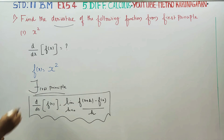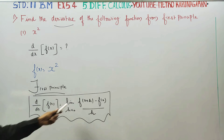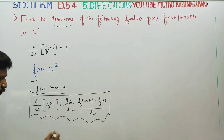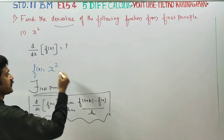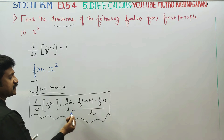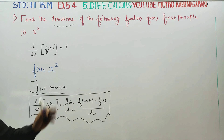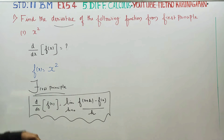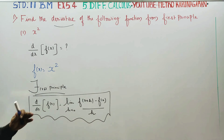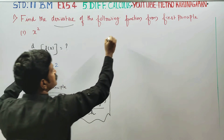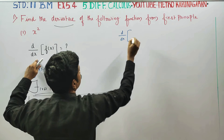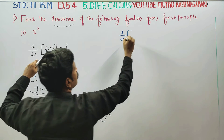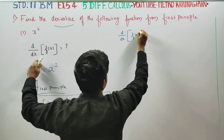In the formula, we substitute using the function. Looking at the function: f of x plus h is equal to x plus h squared, and f of x is equal to x squared, divided by h, as h tends to 0. This gives us the derivative of the function.